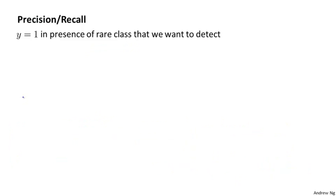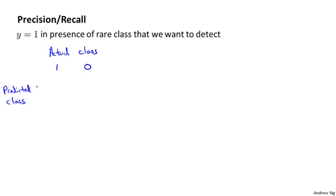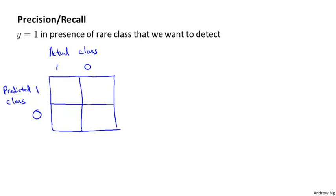One such evaluation metric is called precision and recall. Let's say we're evaluating a classifier on a test set. For each example, the actual class is either 1 or 0 in this binary classification problem, and our learning algorithm predicts a value that is also either 1 or 0. We can draw a 2 by 2 table depending on what the actual class was and what the predicted class was.